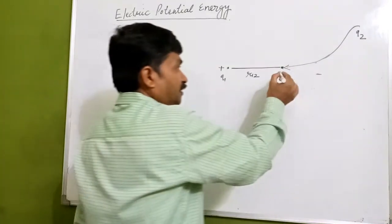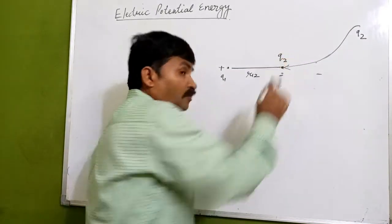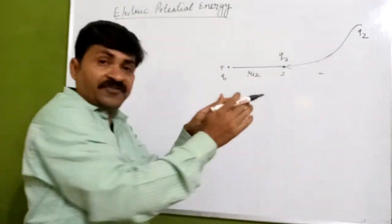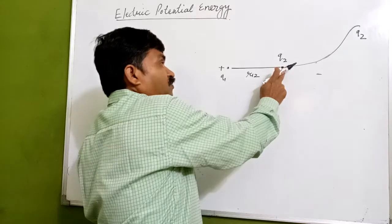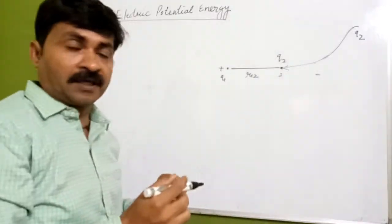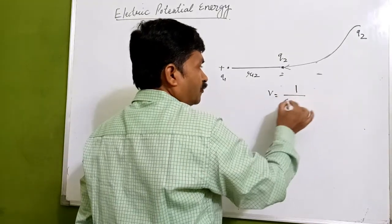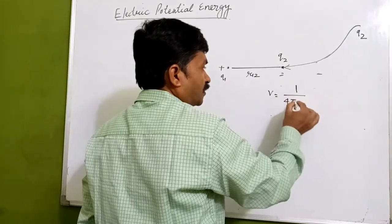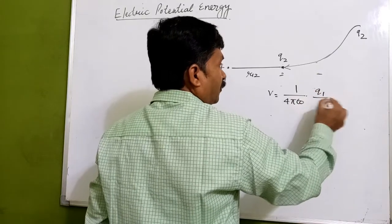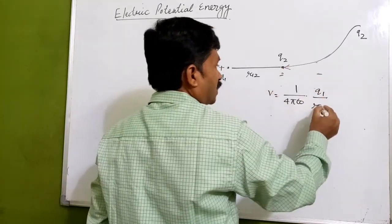We are bringing charge q2 from infinity up to point two. There is an electric field, and this point has an electric potential. That potential is given by V = 1/(4πε₀) × q1/r12.